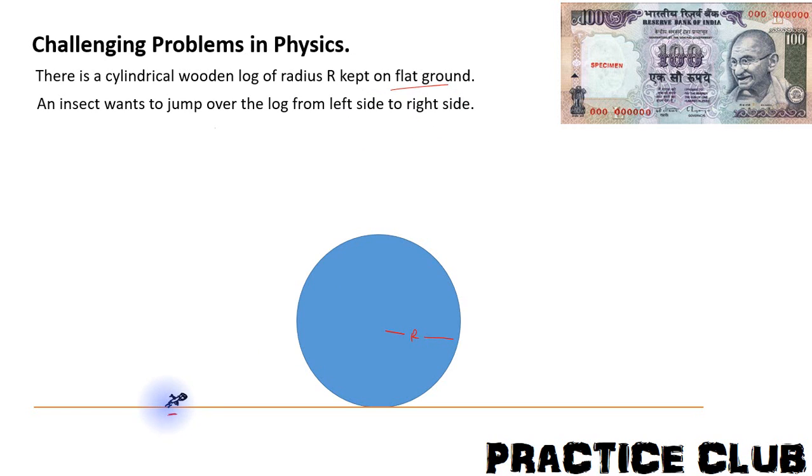This insect wants to jump from the left side to the right side. He can choose from wherever he wants to jump. That means on the left side he can jump from whichever point he wants to jump from, and he can choose whichever angle he wants to jump.